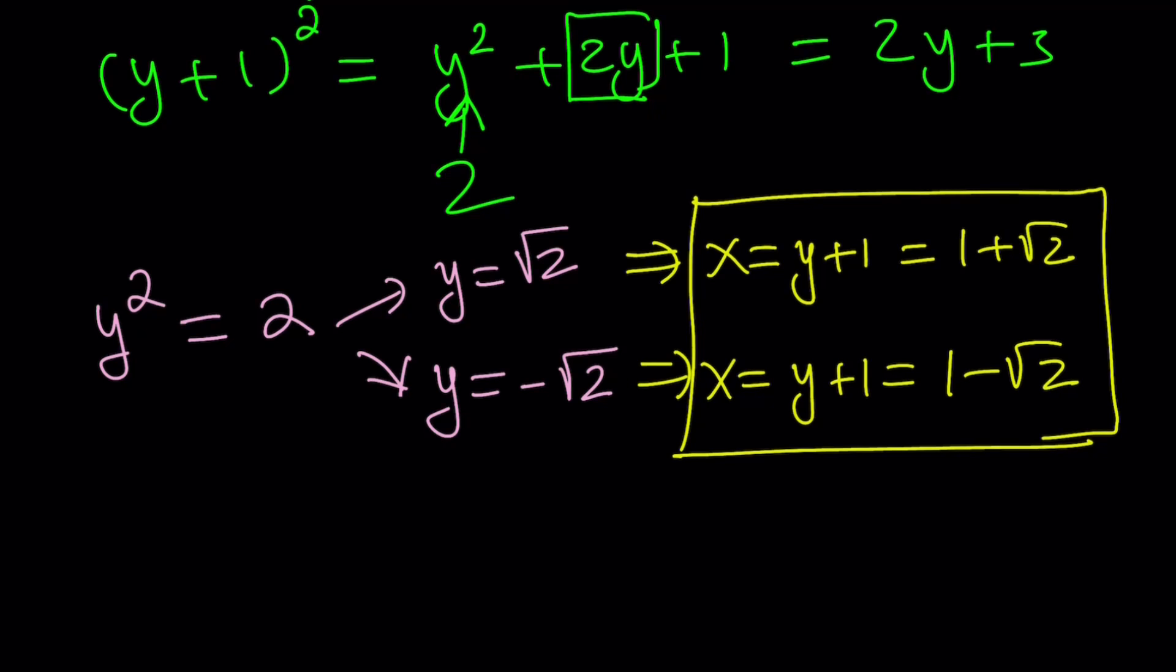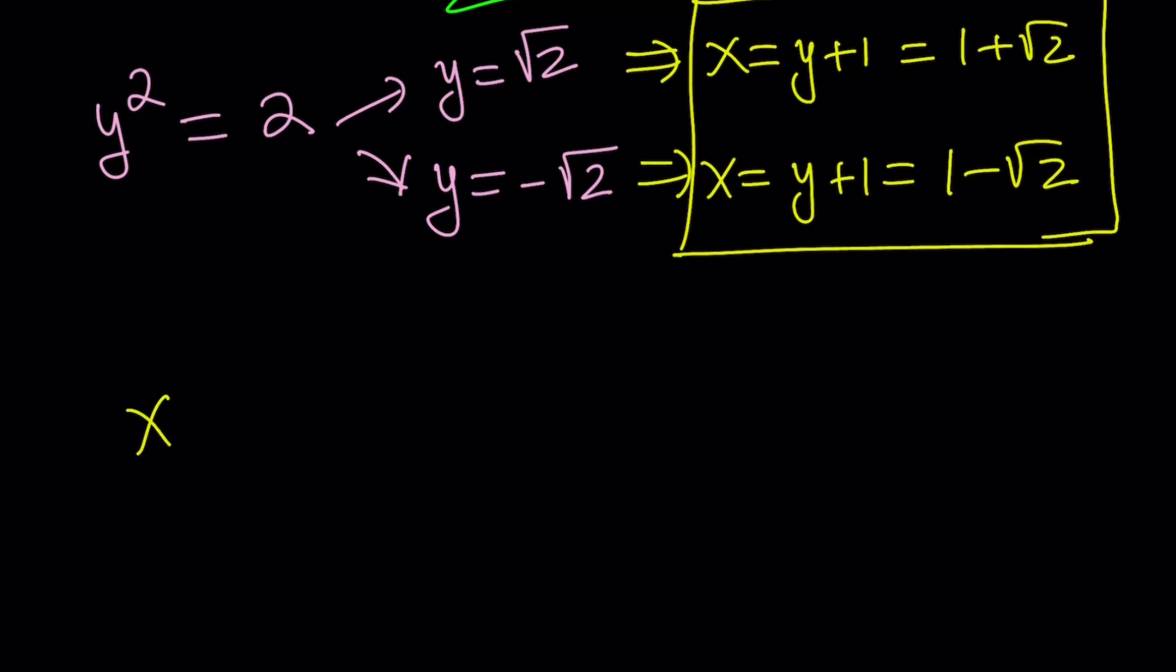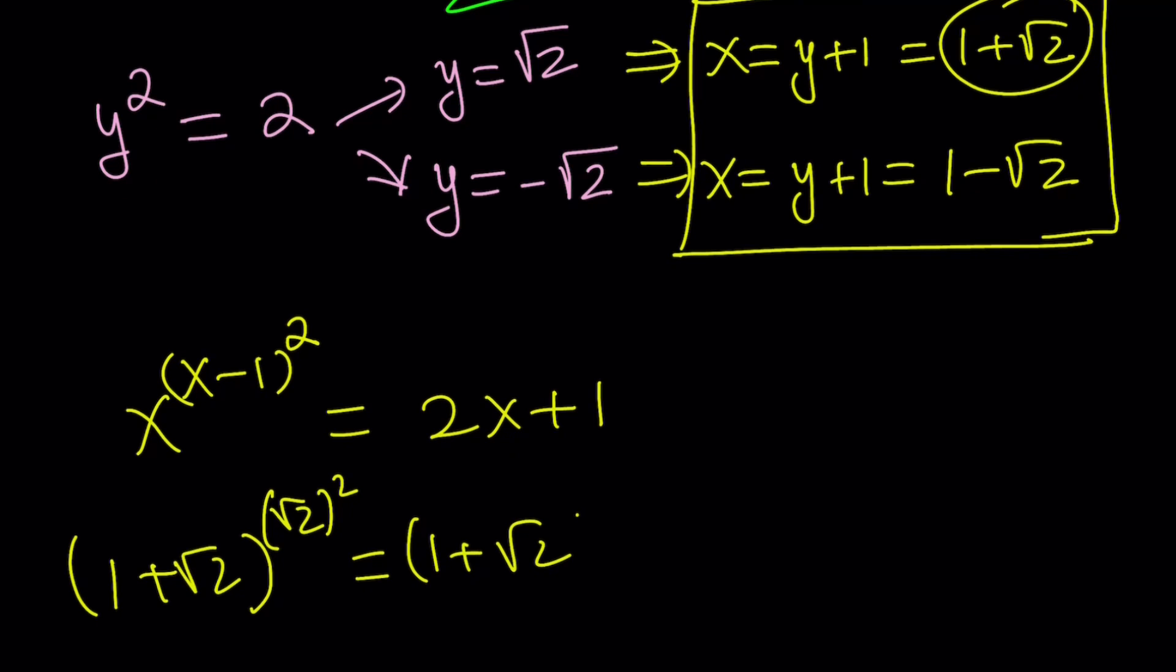So here's the checking part. I want to use the x values for checking. x^(x-1)² = 2x+1. Now replace x with 1+√2 first. (1+√2)^(√2)² equals (1+√2)².